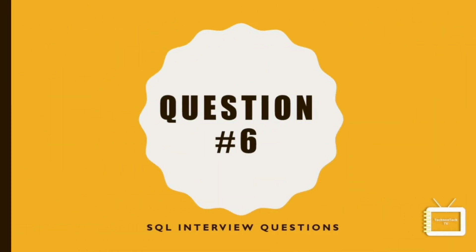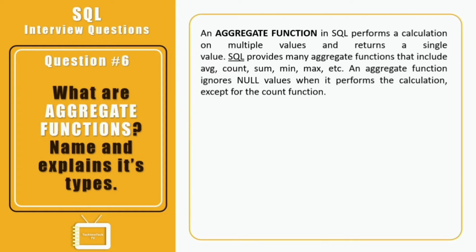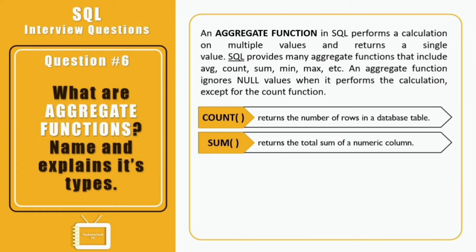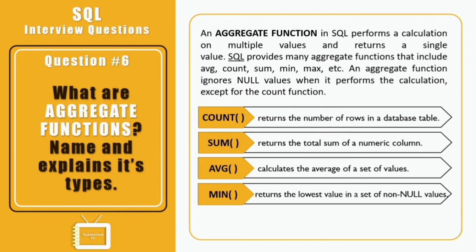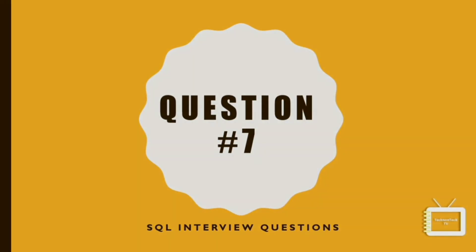Question six: what are aggregate functions? An aggregate function performs a calculation on a set of values and returns a single value. It can be used with or without the GROUP BY clause. There are five aggregate functions: COUNT returns the number of records or rows; SUM calculates the total of given values; AVG calculates the average; MIN finds the minimum value; and MAX returns the highest value in a set of non-null values.